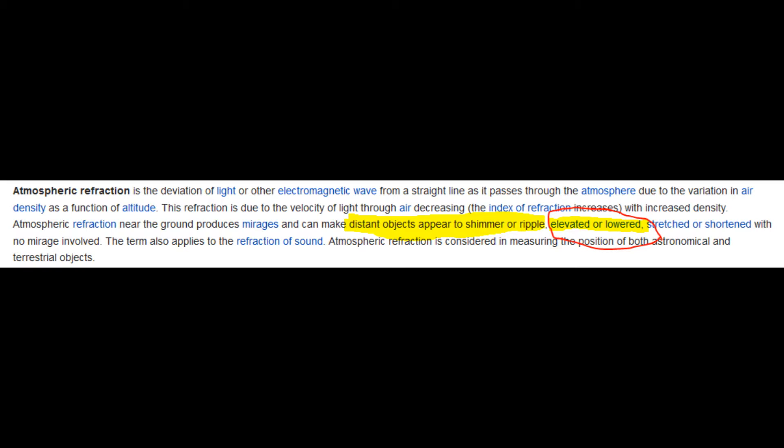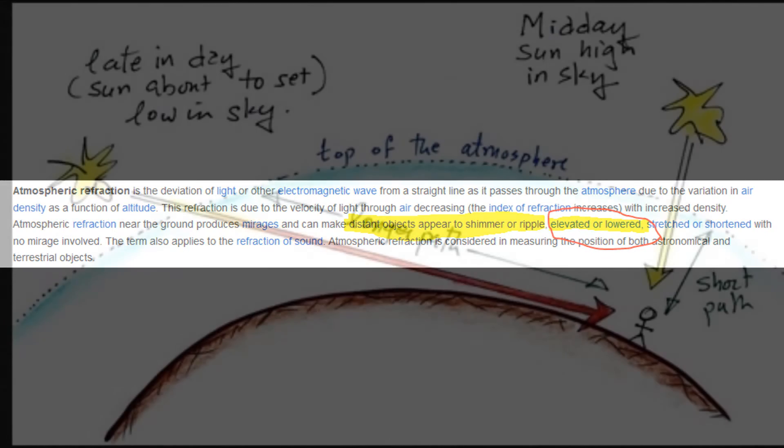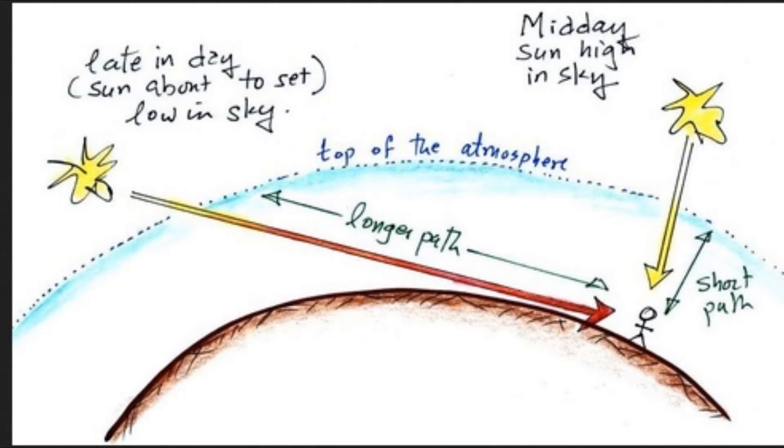Wikipedia defines atmospheric refraction as the deviation of light or other electromagnetic waves from a straight line as it passes through the atmosphere due to the variation in air density as a function of altitude. Atmospheric refraction near the ground produces mirages and can make distant objects appear to shimmer or ripple and appear elevated or lowered, stretched or shortened with no mirage involved.